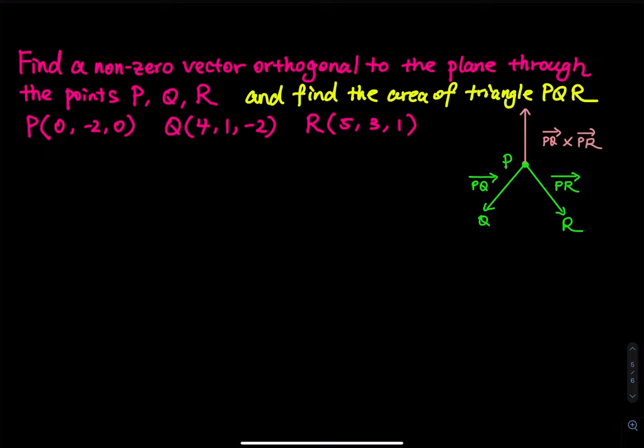Find a non-zero vector orthogonal to the plane through the points P, Q, and R, and also find the area of the triangle PQR. So we have coordinates for P, for Q, and then for R in three dimensions.